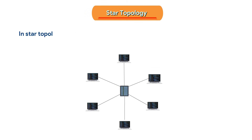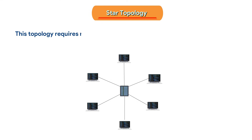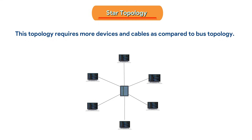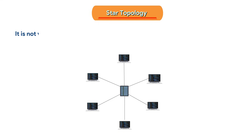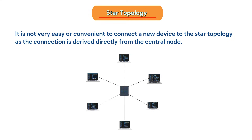In Star Topology, each node is physically connected to the central node. This topology requires more devices and cables as compared to BUS Topology. It is not very easy or convenient to connect a new device to star topology, as the connection is derived directly from the central node.